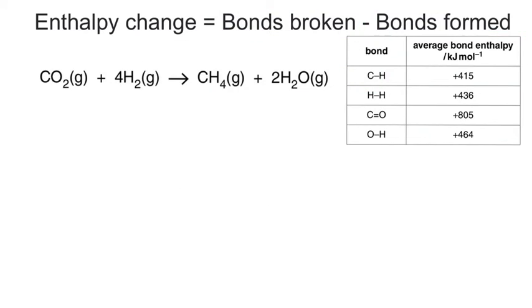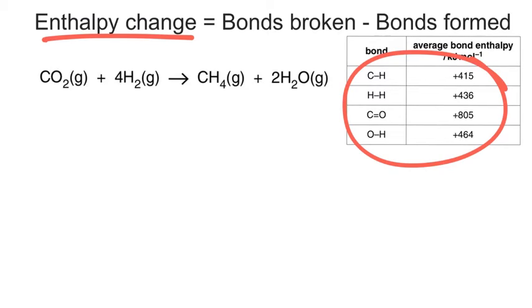So how can we utilize this in the exam? Well, this is the actual equation as well that came up for this average bond enthalpy data table. And we can see here we've got CO2 reacting with hydrogen to make methane and some water. Now, what they wanted you to do, just as I described at the start of this video, was calculate the enthalpy change using all of this data that we've got just here.